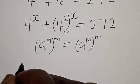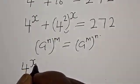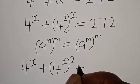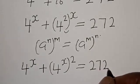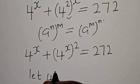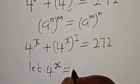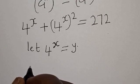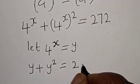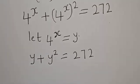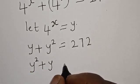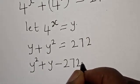Then this becomes: we have 4 raised to power s plus 4 raised to power s squared is equal to 272. Now let 4 raised to power s equal y. Then we have y plus y squared is equal to 272. Rearranging, we have y squared plus y minus 272 is equal to 0.